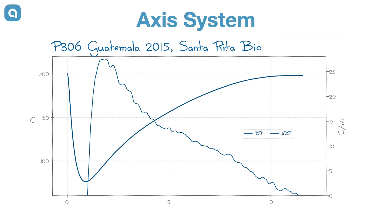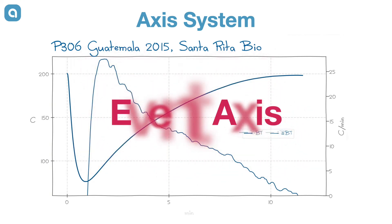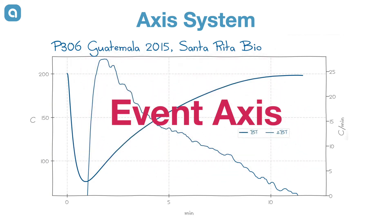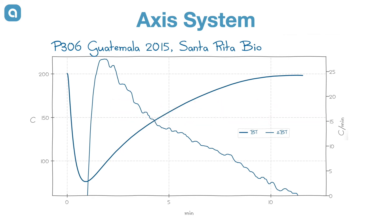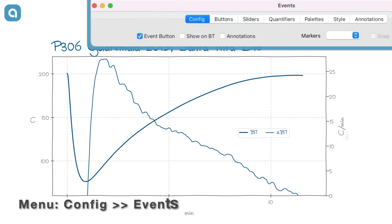There is one more y-axis. This one is not drawn on the screen but operates behind the scenes to locate the event marks. The event dialog allows to configure the rendering of event marks.